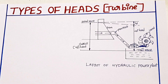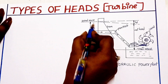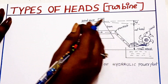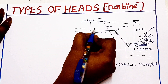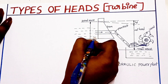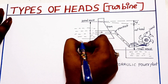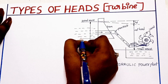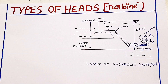First of all, what is head? Head is the height of the water. This is a dam, and this is a river. The height at which the water flows — that height of the water is called head.